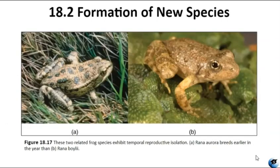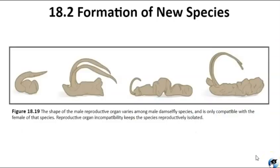Figure 18-17 gives an example of temporal isolation. Two closely related frog species reproduce and mate at different times of the year, so they are reproductively isolated from each other. Another type of isolation occurs when specific behaviors prevent reproduction. For example, male fireflies use unique light patterns to attract females, but different species have different patterns, so if a male tries to court a female from another species, she won't recognize the pattern. There are other barriers before fertilization, like gametes of closely related organisms not being compatible. Figure 18-19 shows damselfly males that have differently shaped reproductive organs, so if a male tries to mate with a female from another species, it won't work.